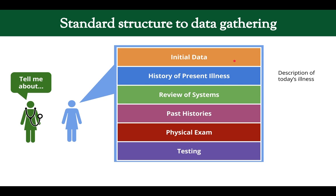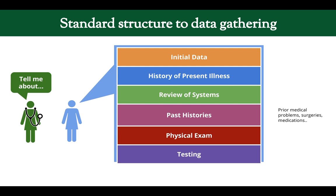Next is the history of present illness — the description of what is bothering the patient today. The review of systems goes through every organ system to check for problems that may have been missed in the HPI. The past history covers prior surgeries, prior medical problems, medications, smoking history, occupation, and allergies — information that may not be directly relevant to the HPI but is still very important to know.